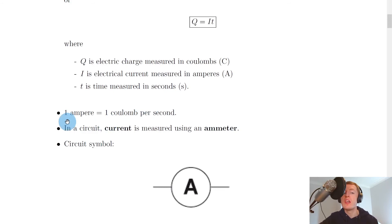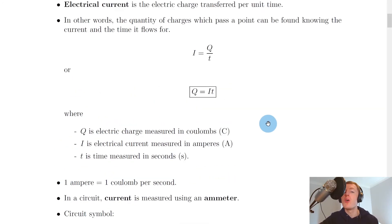We can then say that from this equation, one ampere is equal to one coulomb per second. And we can see that from the equation in the form of the current here.